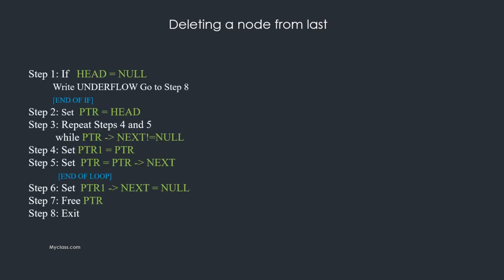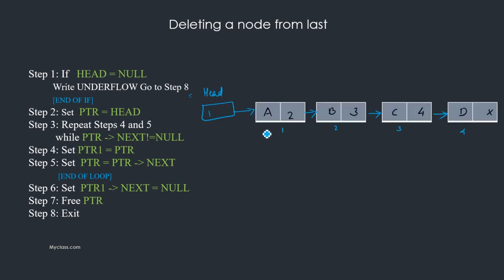Next: deleting a node from the last position. If head equals null, underflow — go to the last step. Otherwise, we point ptr to head. For deleting the last node, we need to traverse the entire linked list. We declare a new pointer ptr equal to head, then repeat steps four and five while ptr next is not null.